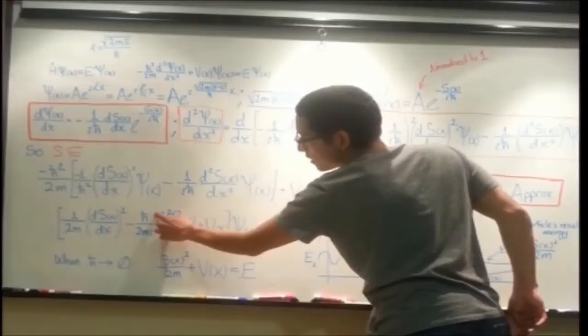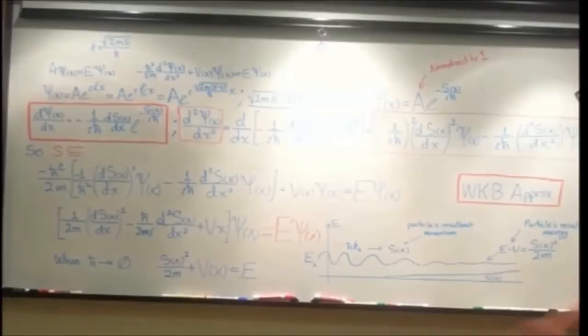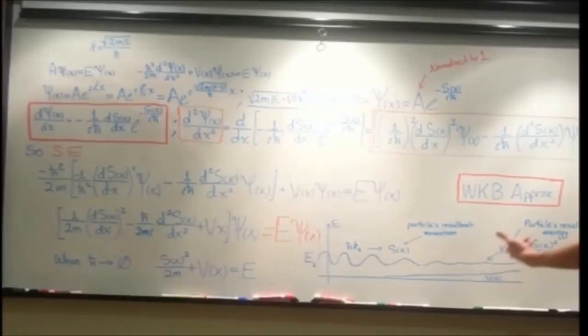So once we take the limit of ℏ, as ℏ goes to zero, we go back to the classical size. We're brought back to the classical version of this equation and it corresponds perfectly. So we approximate for the Schrödinger equation by making this substitution for the momentum. And we can then say the energy of that resultant particle is the function involving x squared over 2m.